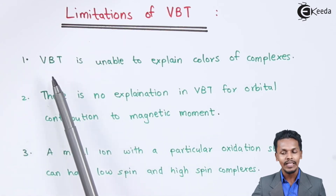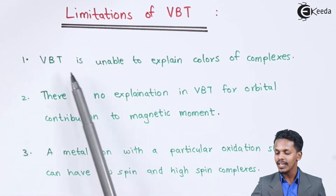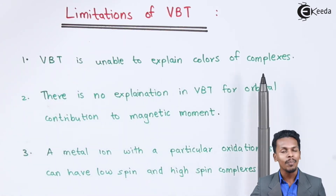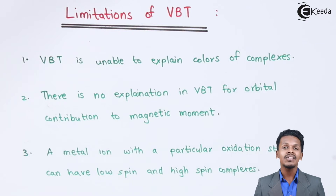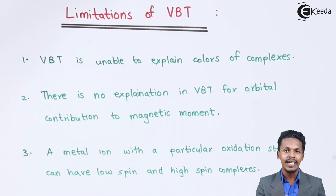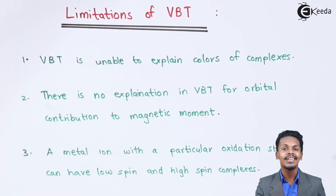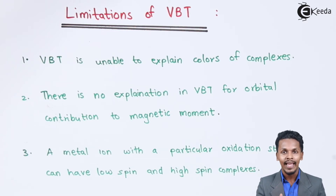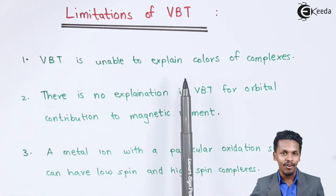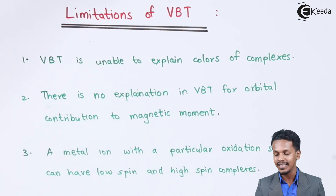Starting with the first point: valence bond theory is unable to explain the color of the complex. We understand that a complex has different colors, and depending upon the ligands it has different colors. But in the case of valence bond theory, it doesn't give the explanation about why and what the color of the complex is. So that is the biggest drawback of the valence bond theory.